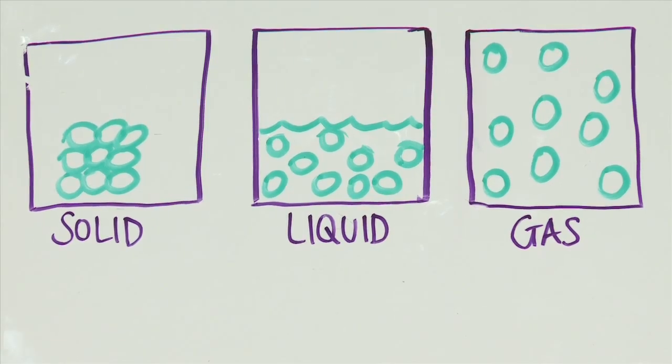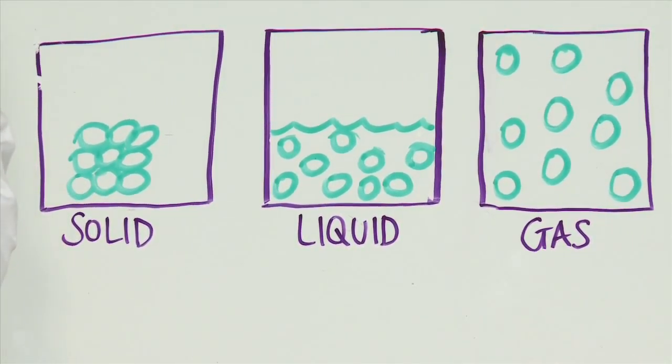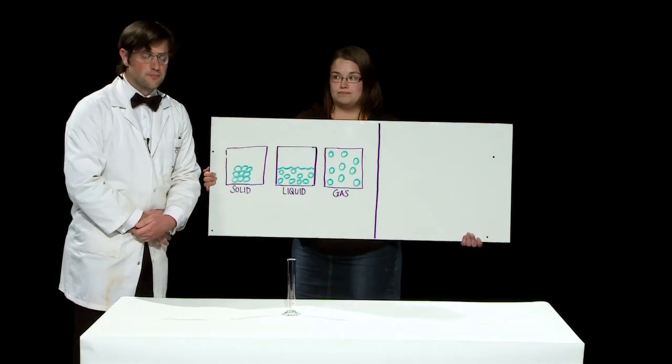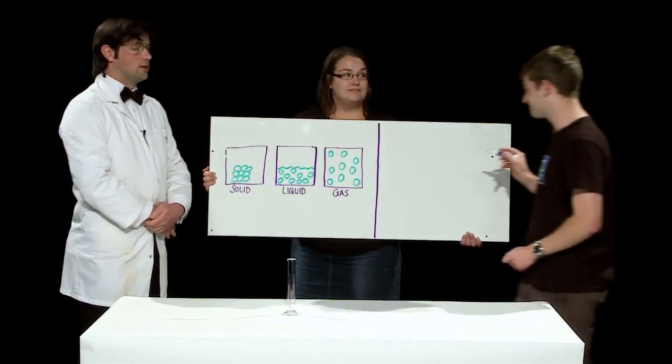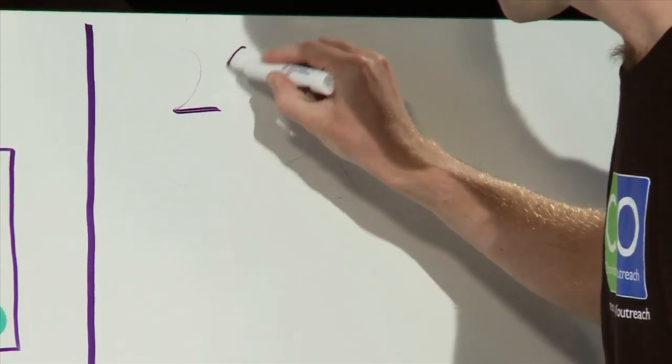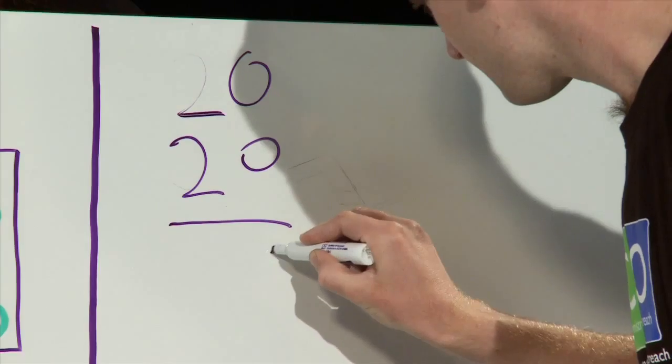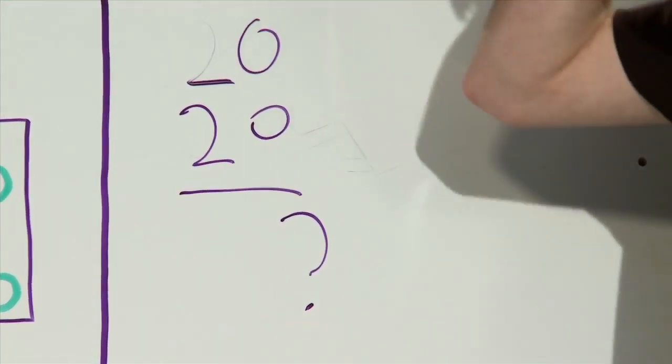Now that's going to be important during the results of our first experiment which is the 20 plus 20 experiment. Now the invention of modern mathematics has helped us to calculate what 20 and 20 might be equal to. Do you think you can solve this conundrum?